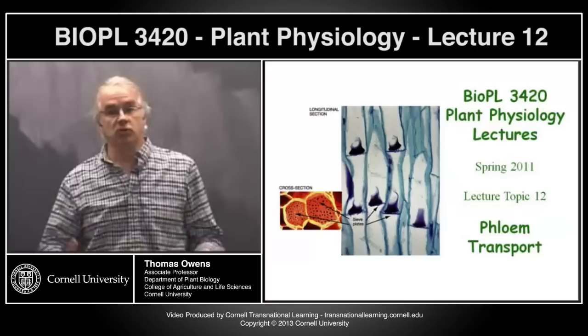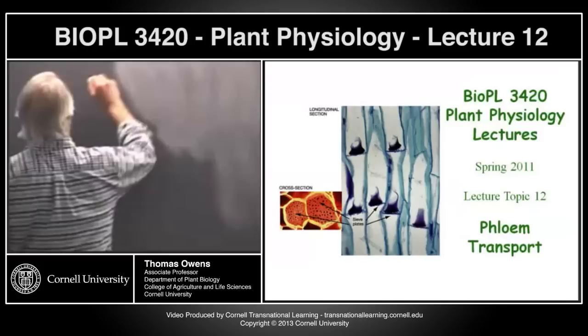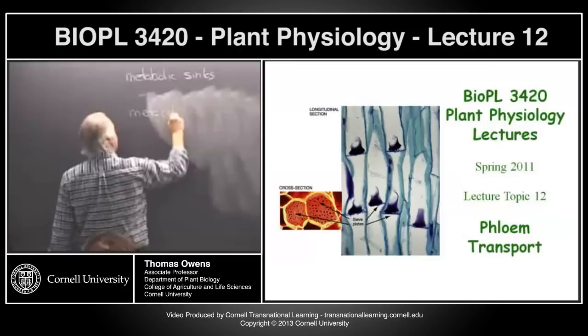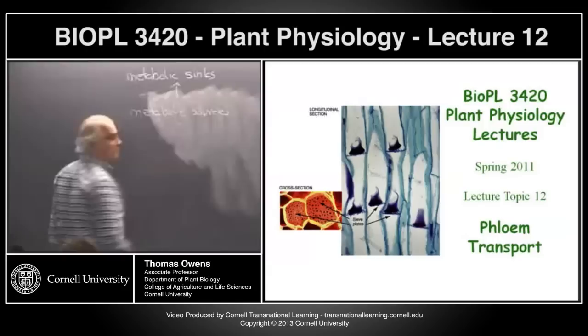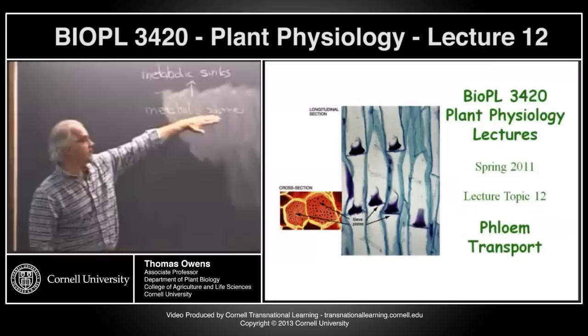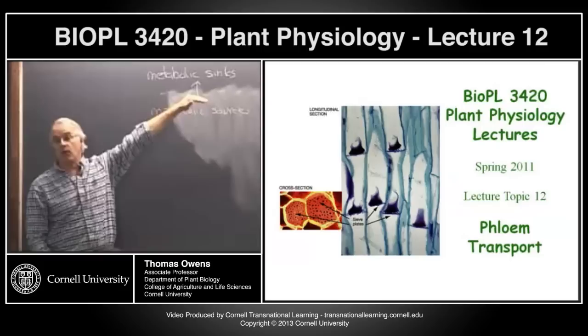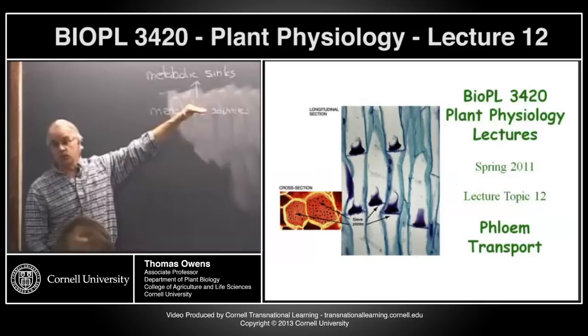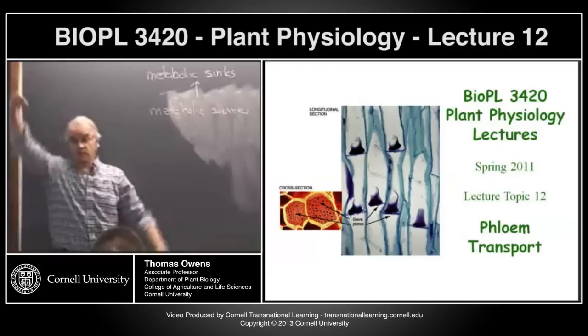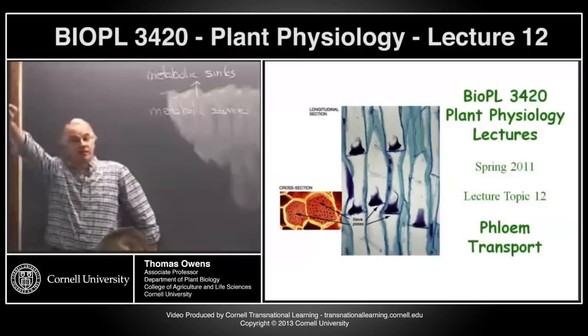The way this always goes is from metabolic sources to metabolic sinks, and we need to keep in mind that sources and sinks are dynamic. Flowers are developmental sinks — they're not there all the time, only part of the time. They're sinks when they're there and not sinks when they're not. The flowers happen out on the ends of branches, so sometimes during the year stuff has to flow from the leaves toward the end of the branches.